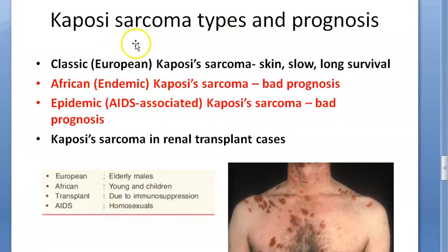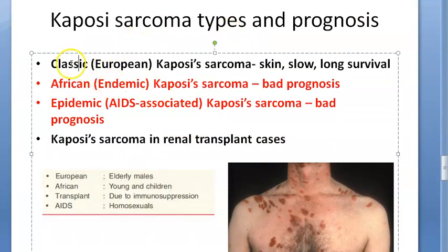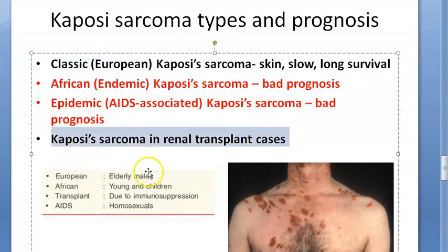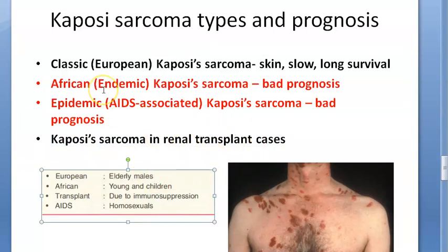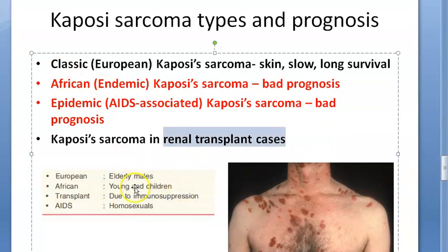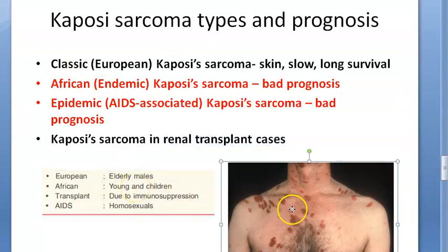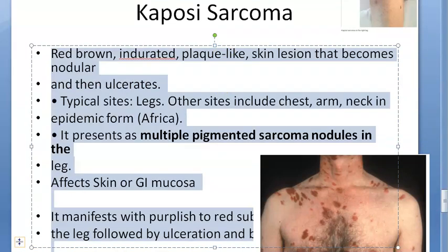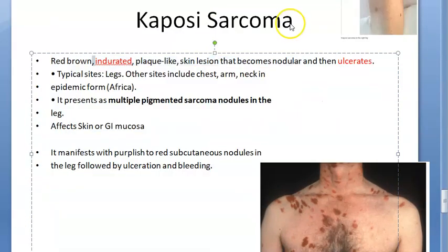There are several types with different prognoses. The classic type has a very good prognosis — it's confined to the skin, has a slow course, and long survival. However, the African type and the AIDS-associated type have bad prognosis and higher mortality. Other types include renal transplant-related and epidemic (AIDS-related) forms.